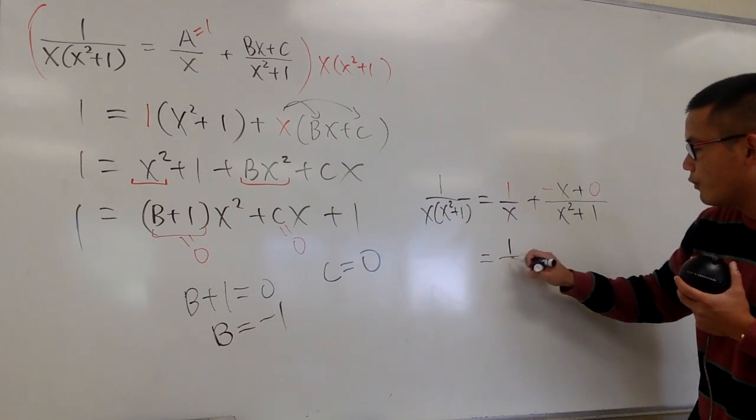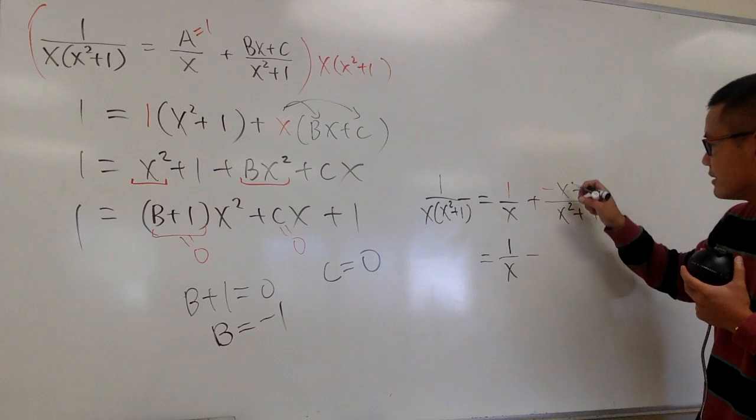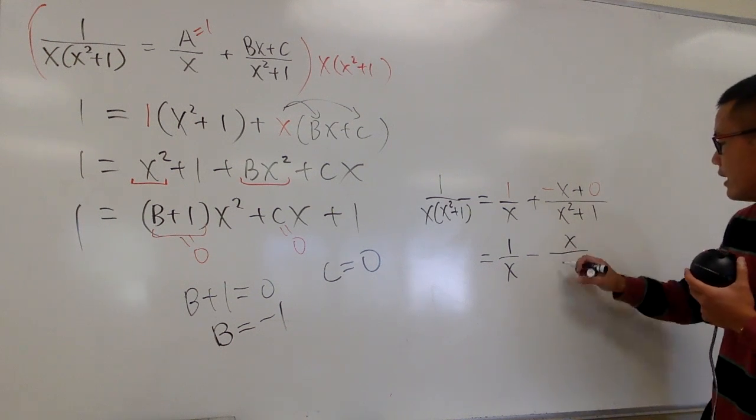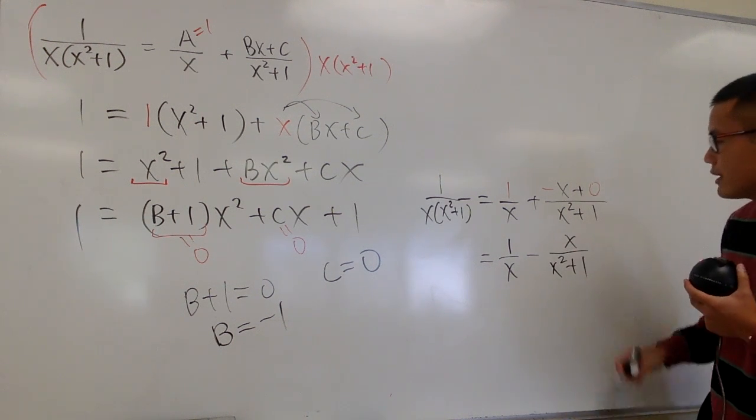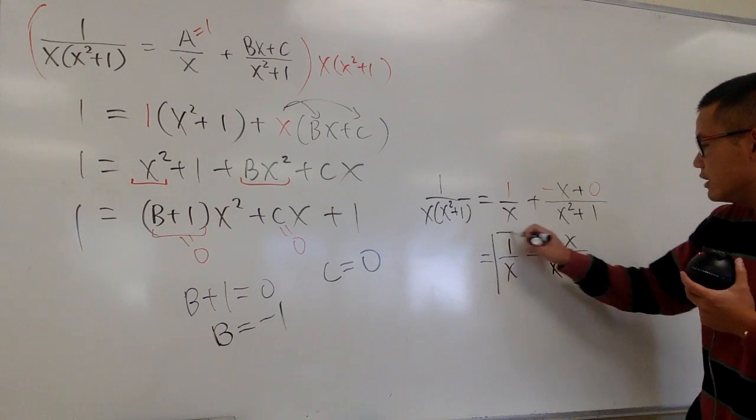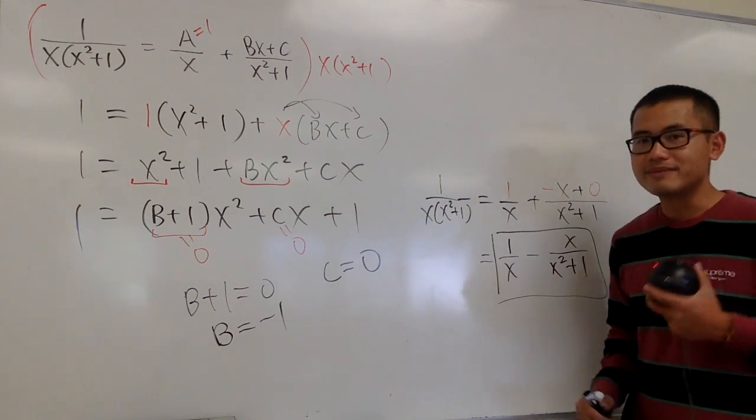This is equal to 1 over x, and then minus x on the top, over x squared plus 1. And that's a partial fraction decomposition for this right here. That's it.